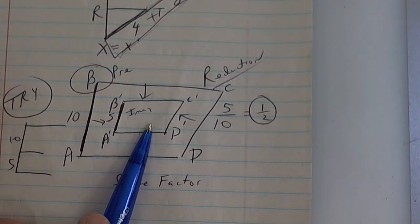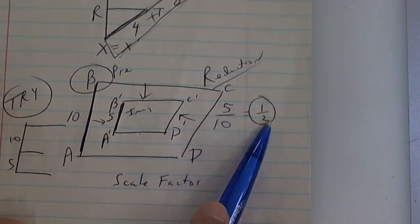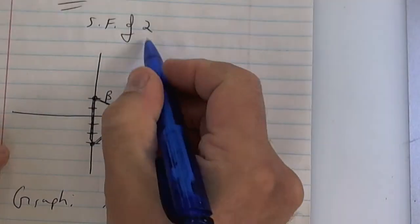Same thing on this one. This one is a reduction, going from bigger to smaller, so put 5 over 10 and reduce it to one half. The scale factor is one half.